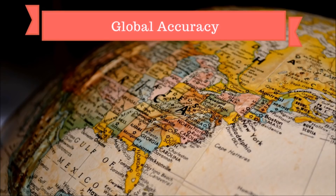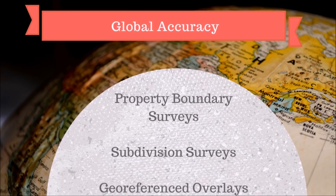Moving on to global accuracy — if you're wondering when such scenarios arise, here are some examples. Property boundary surveys require extremely precise coordinates of boundary lines and points, so GCPs are most definitely needed. Subdivision surveys apply when properties need to be subdivided accurately as per real-world conditions. Geo-referenced overlays are needed if the customer requires outputs to be overlaid with other globally accurate spatial layers.